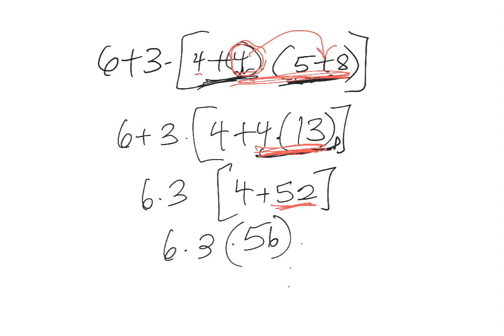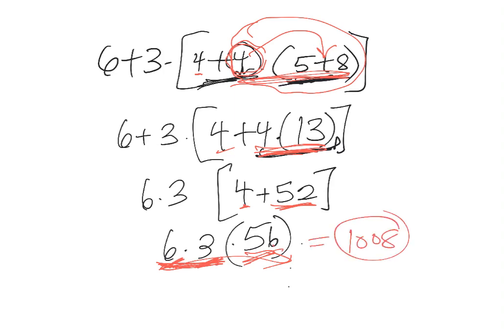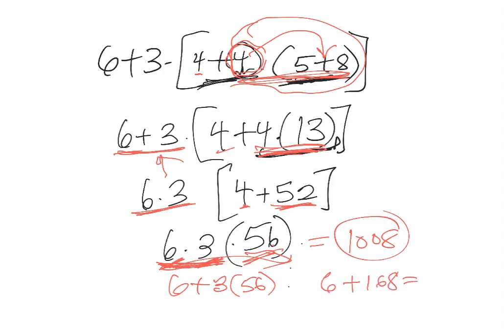The four that was waiting can now add to fifty-two, giving four plus fifty-two equals fifty-six. Then six times three is waiting outside — and I need to correct myself: the problem is actually six plus three, not six times three. So we do fifty-six times three which is one hundred sixty-eight, and then add six. Six plus one hundred sixty-eight gives a final answer of one hundred seventy-four.